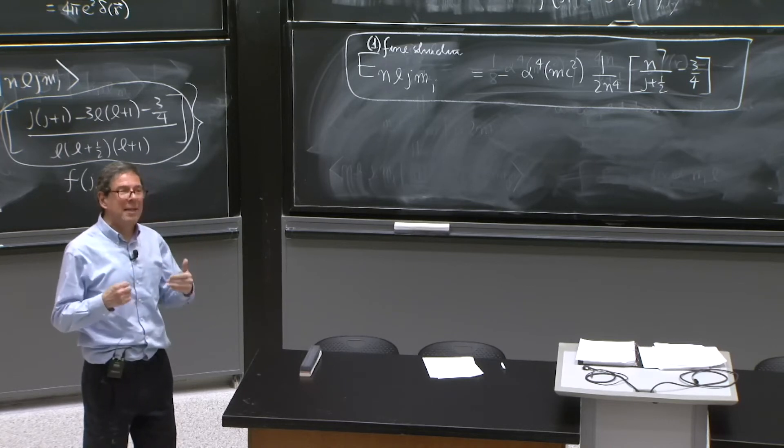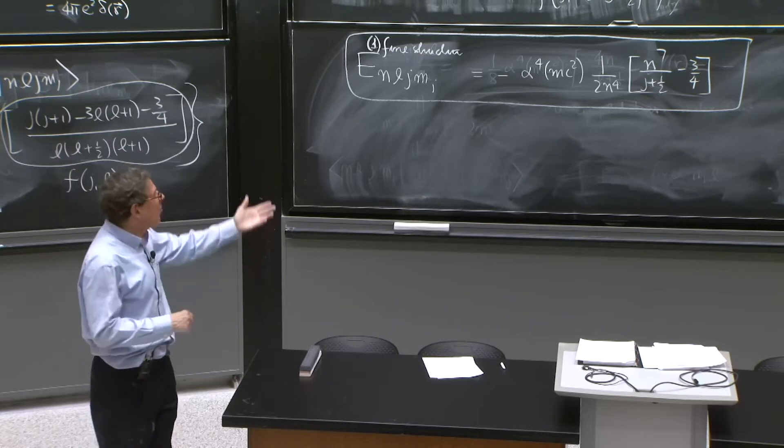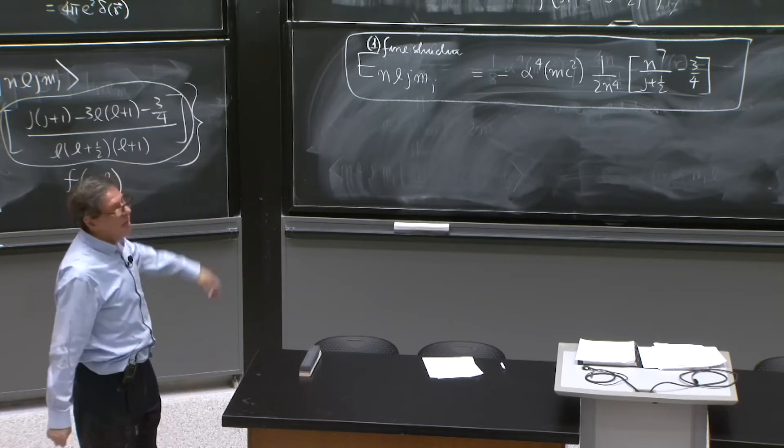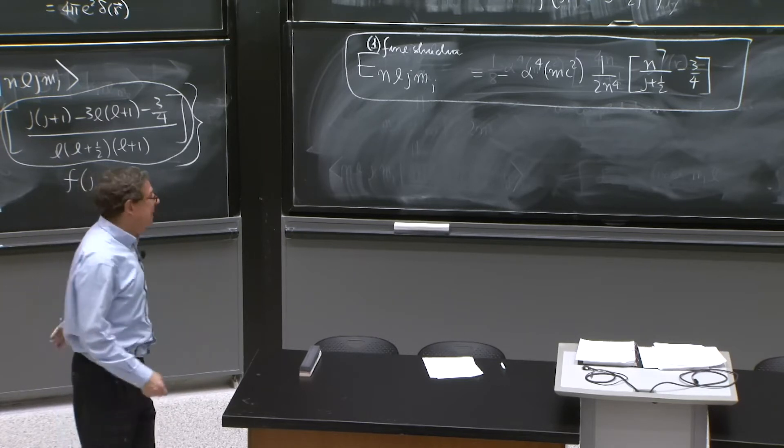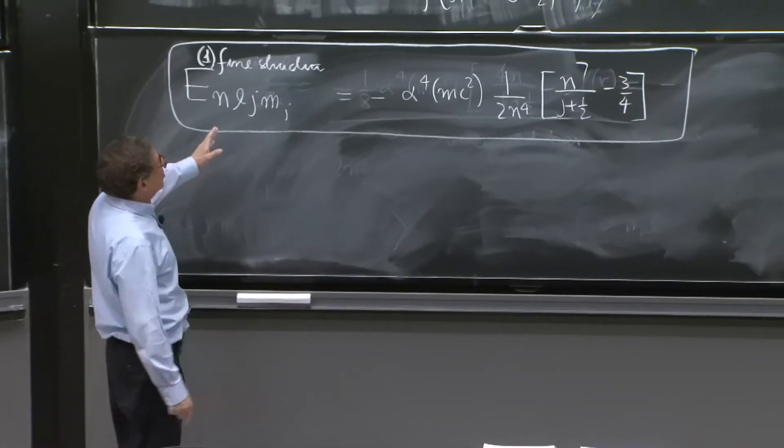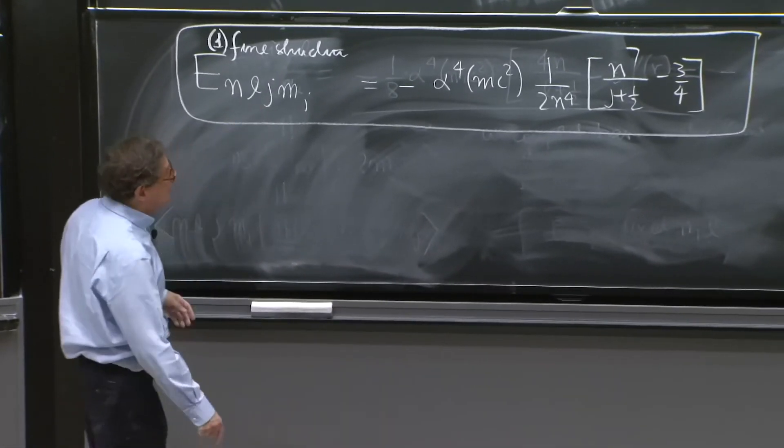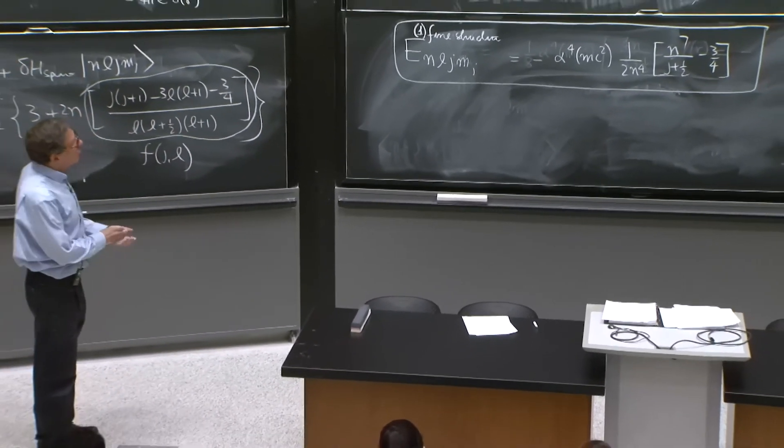So you should expect that the energy eigenstates are j eigenstates. So here we're seeing that, yes, they can be simultaneously diagonalized. The eigenstates can also be labeled by the j value. So the exact eigenstates in the Dirac equation can be labeled by the j value. And we're seeing a reflection of this.